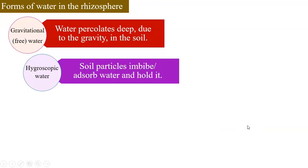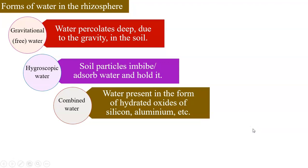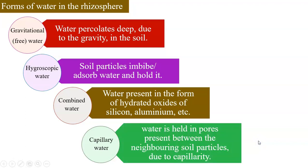Gravitational water which percolates deep due to the gravity in the soil. Hygroscopic water. The soil particles they adsorb this water and tightly hold this water. Combined water is present in the form of hydrated oxides. The chemical reactions they have undergone with silicon and aluminum. Whereas capillary water is present in between the soil particles and it is held by capillarity.